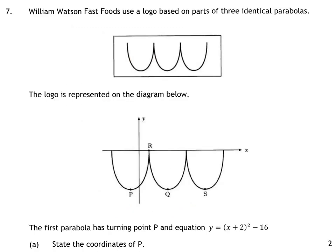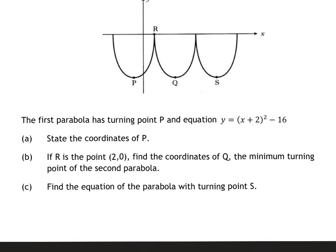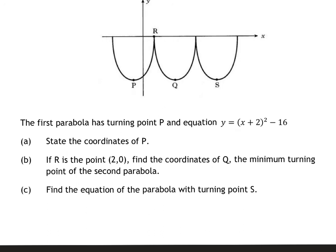Question 7 is a quadratic question. So we've got a logo of three quadratics. The first thing we have to do is find the coordinates of P. The coordinate of P: the plus 2 in the bracket means it's going to negative 2, so the x-coordinate is negative 2. Minus 16 means it's going down 16, so those are the coordinates of P.